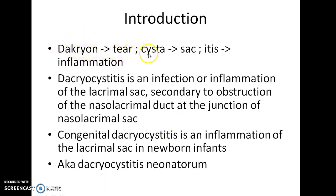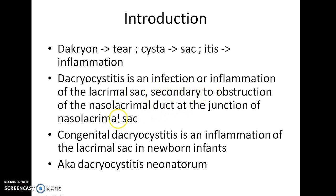Dacryon means tear, system means sac, and itis means inflammation. So dacryocystitis literally means inflammation of the tear sac. Dacryocystitis is an infection or inflammation of the lacrimal sac secondary to obstruction of the nasolacrimal duct at the junction of the nasolacrimal sac.